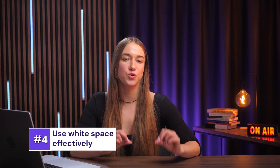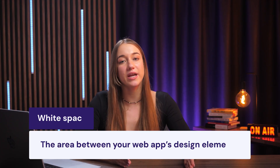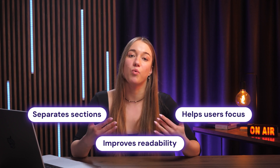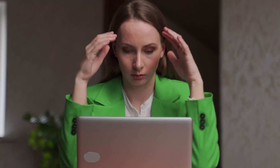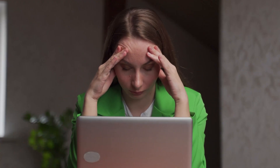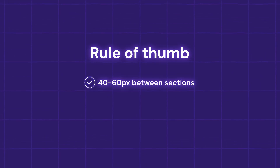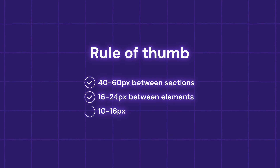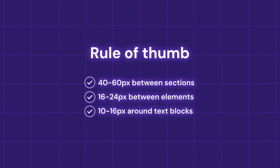Next, let's move on to white space. To put it simply, it's the area between your web app's design elements. It separates sections, improves readability, and helps users focus on what actually matters. Without enough of it, your app can feel really cramped, confusing, and just not appealing at all. But with the right spacing, everything will feel easier to read and to navigate. There are a couple of guidelines here: allow 40 to 60 pixels between sections for really clear breaks, then leave 16 to 24 pixels between elements like buttons, images, and form fields. Finally, add 10 to 16 pixels of padding around text blocks to make them easier to parse.